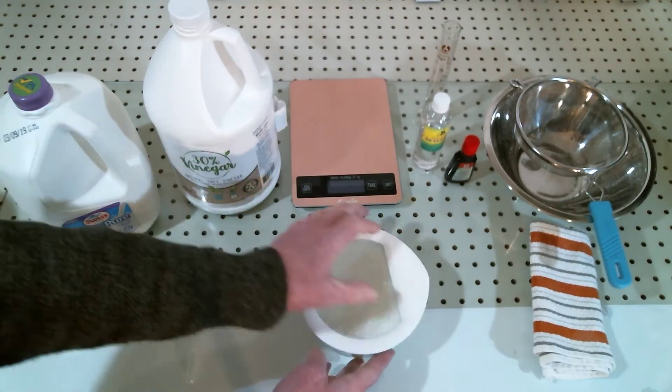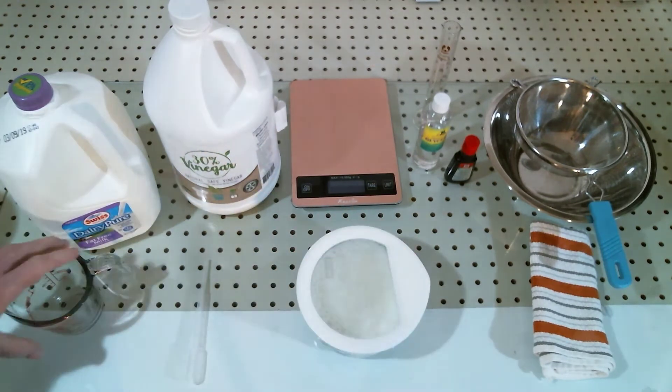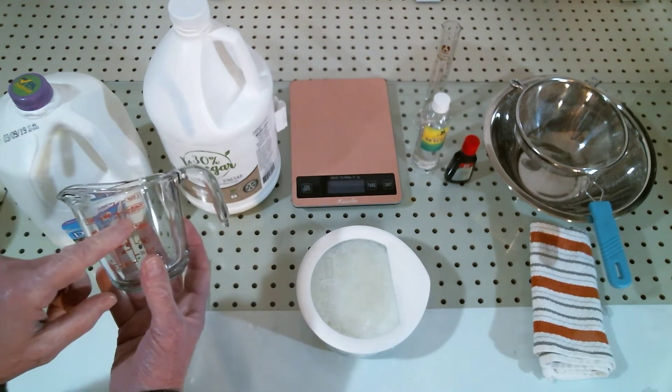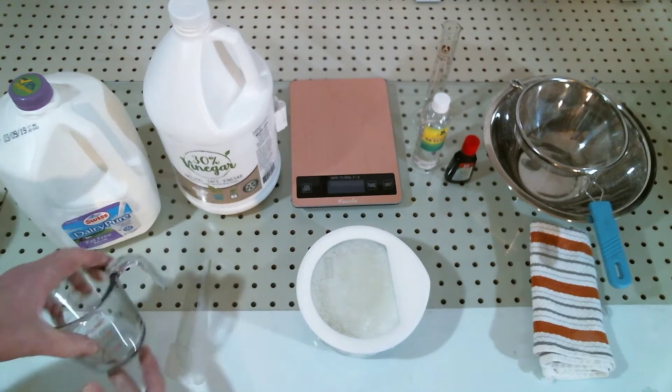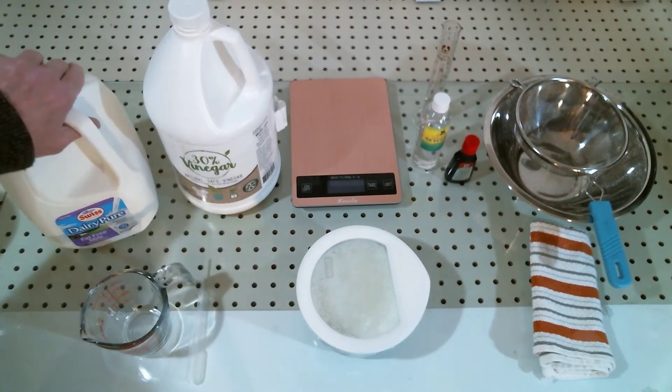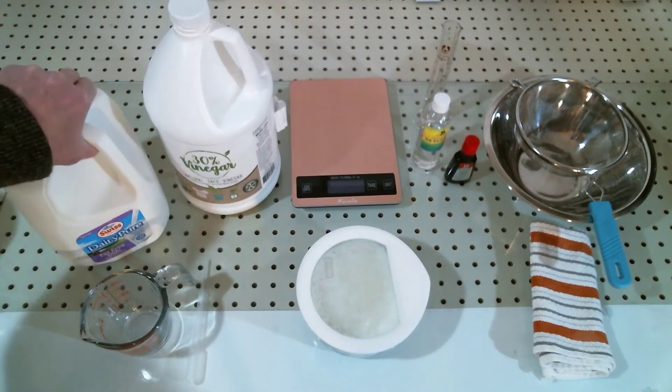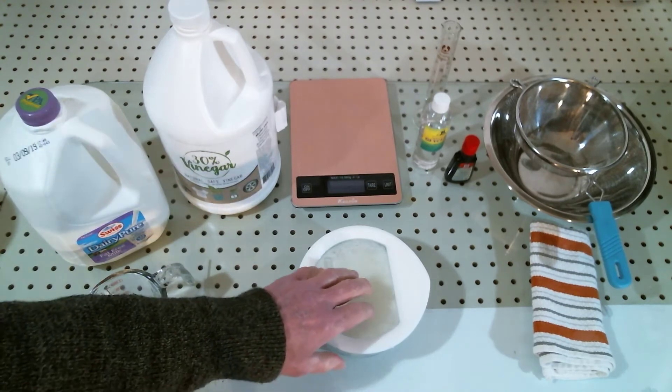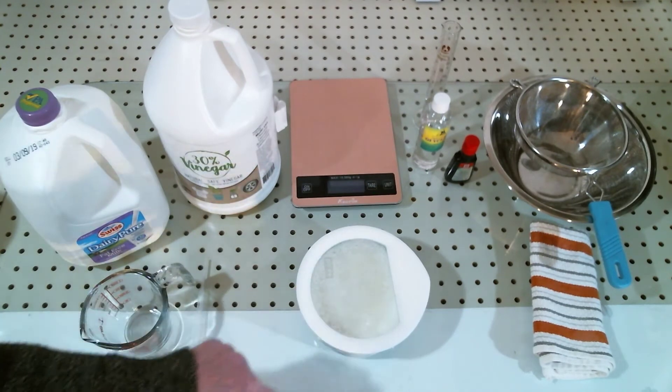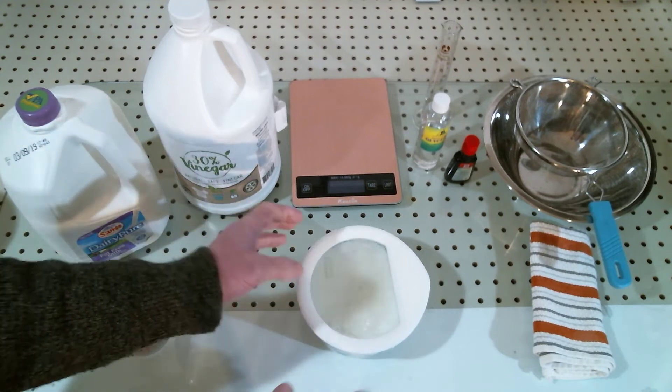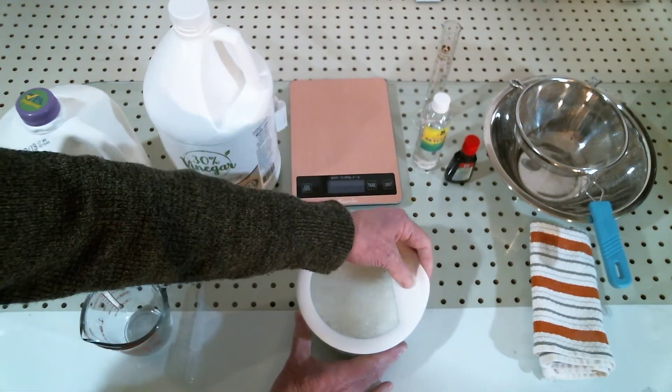All right, so what I've gone ahead and done is I've poured two cups of factory milk into this container and I've heated it a little bit in the microwave. You want to keep it below 65 degrees centigrade—about 60 degrees centigrade is ideal for this procedure.